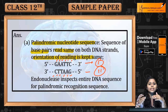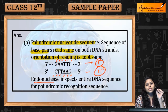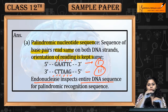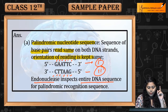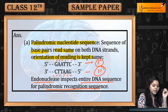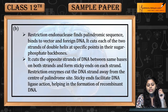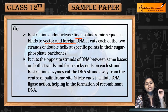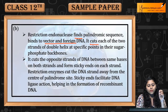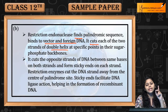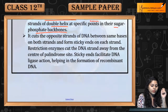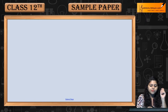Restriction endonuclease inspects the entire DNA sequence for a palindromic recognition sequence and recognizes it by this palindromic sequence. It finds and binds at the palindromic site on both the vector and foreign DNA. It cuts each of the two strands of the double helix at specific points in their sugar-phosphate backbones, meaning it acts at a particular sequence.